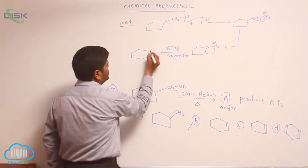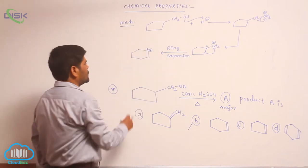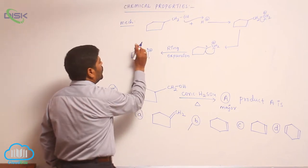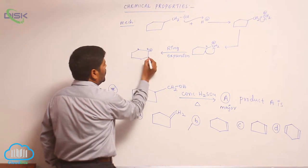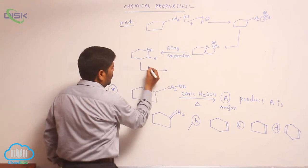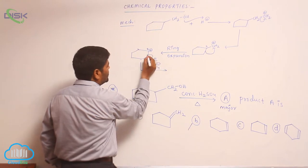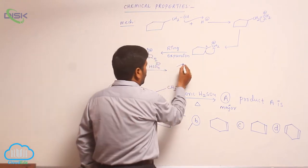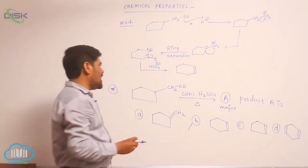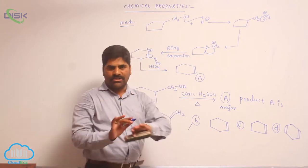So assume this is the first carbon and this is the second carbon. The second carbon carries a positive charge. Now a hydrogen from the first carbon is removed by HSO4⁻, then this bond shifts, forming cyclohexene as the major product. So this is compound A as the major product.